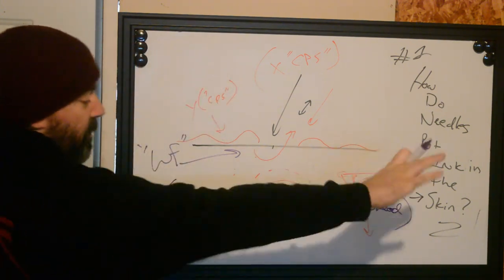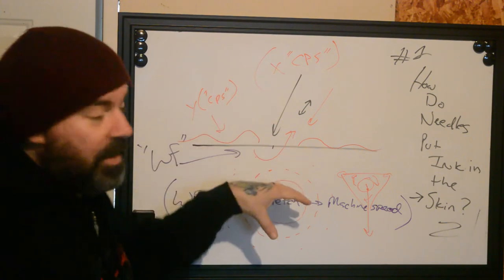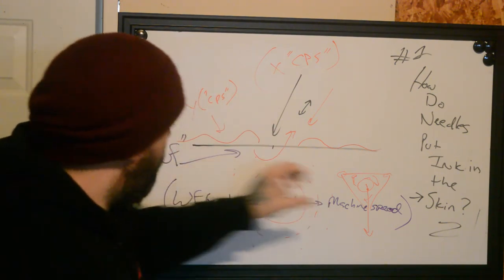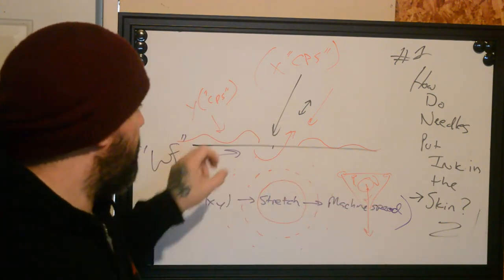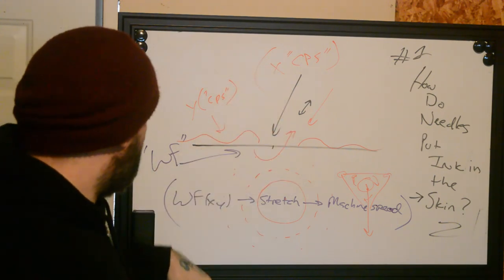So this is our first part of whatever equation that we're going to be using to define how needles are actually going to go into the skin. This is like one block, right? This is those external things that we're going to be able to actually apply to an individual when we're doing this.